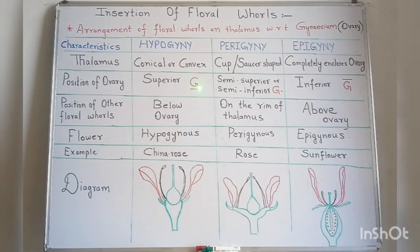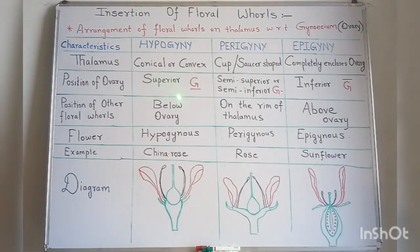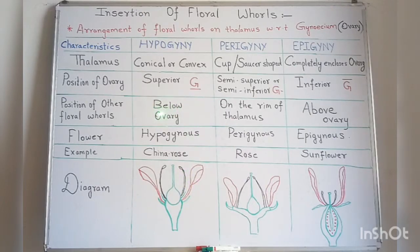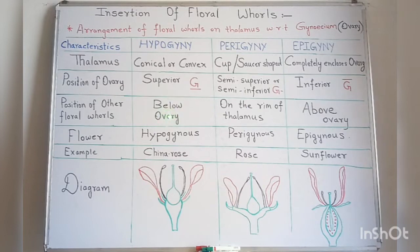In the floral formula, the superior ovary is represented by 'G' with a small line below it — this is the symbol for the position of a superior ovary. The ovary occupies the superior position, and the other floral whorls — that is calyx, corolla, and androecium — are present below the ovary. Such a flower where the ovary is in the superior position and the remaining floral whorls are arranged below it is called a hypogynous flower.